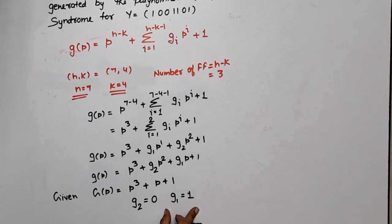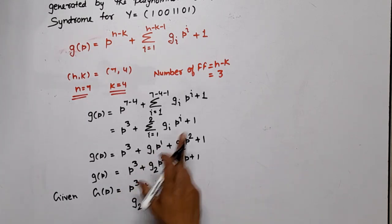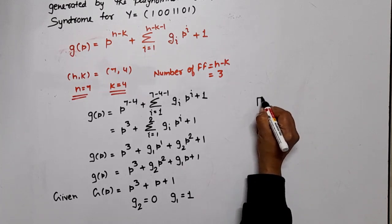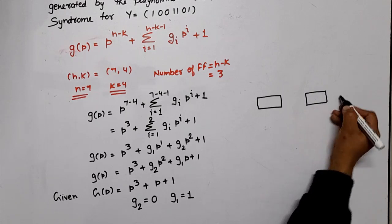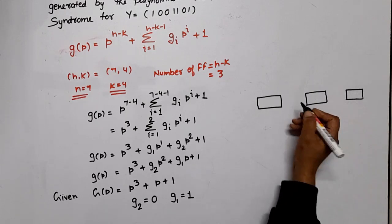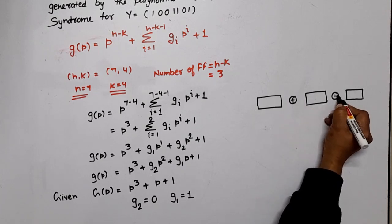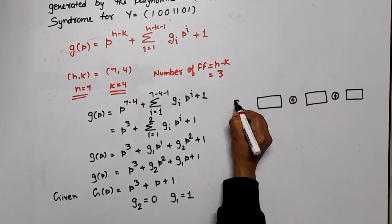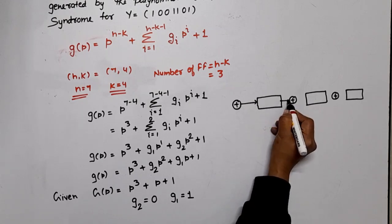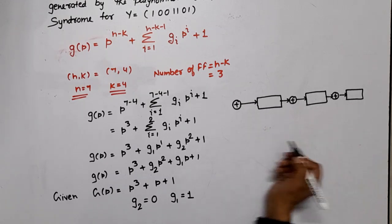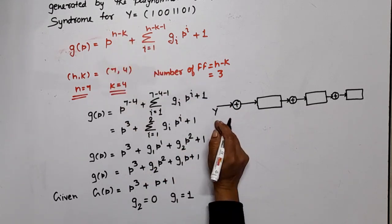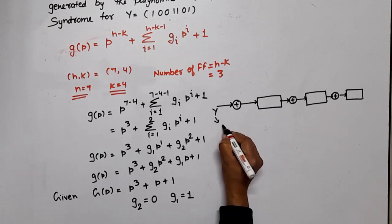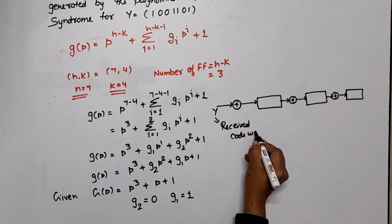Now, we have a calculator. We have a number of flip-flops, 3, means 1, 2 and 3. And this will be interconnected through modulo-2 sum. And the input which is applied, it will be through modulo-2 sum. Where will the input be applied? Here, input means Y is written, so we will also write Y. What is Y? This is received code word.